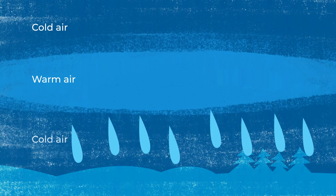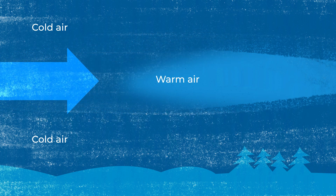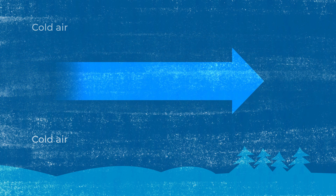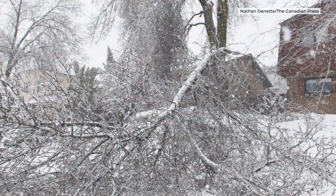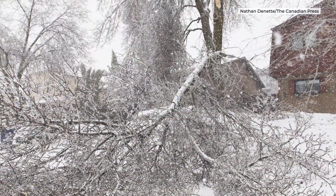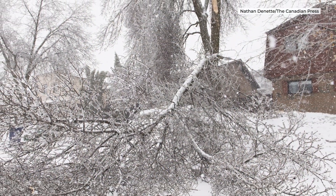Ice storms also get cancelled when the warm air mass is quickly pushed through a region by prevailing winds. It's when large air masses stick around that a storm can go on for days — that's when the more serious damage happens.